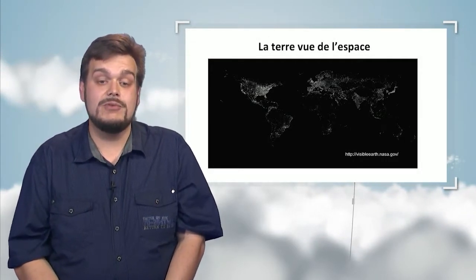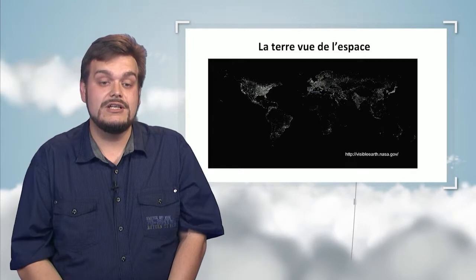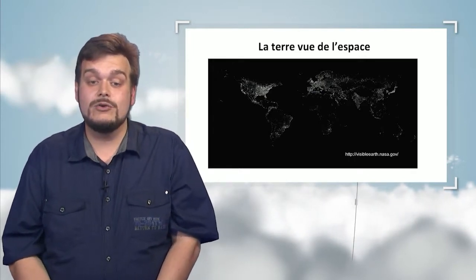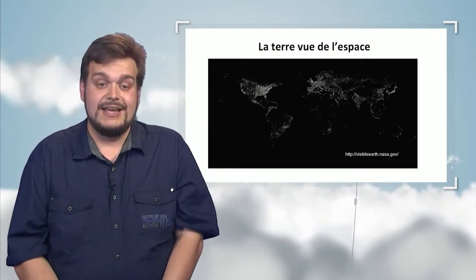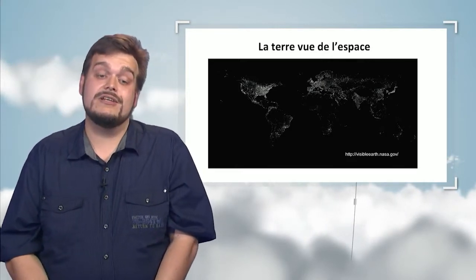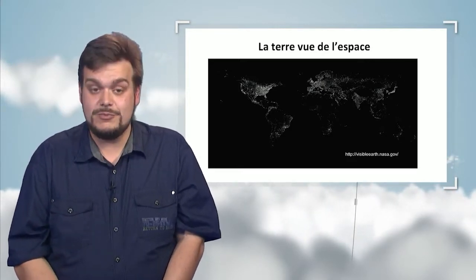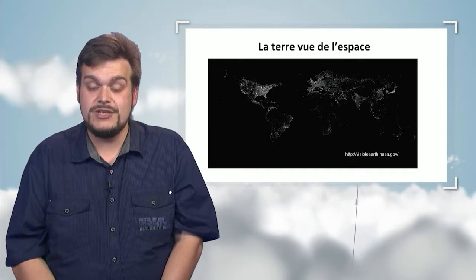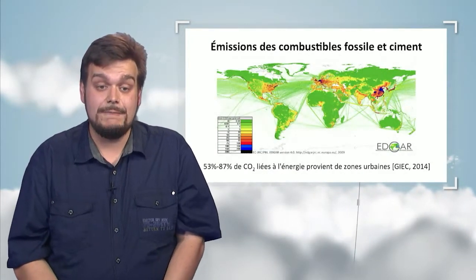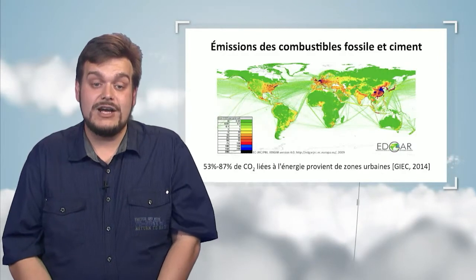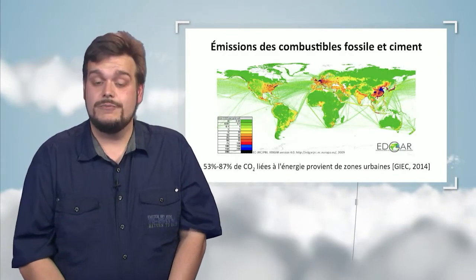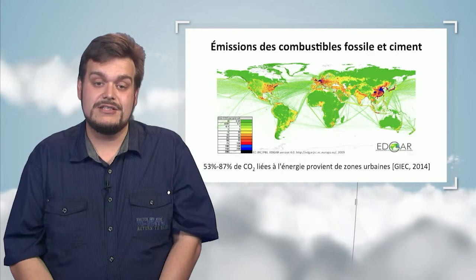We can understand, therefore, the distribution of urban areas across the world. We don't see much light in Africa or Australia. If we were to make a comparison between this type of map with emission maps shown here, we would find a real true correlation between the two.